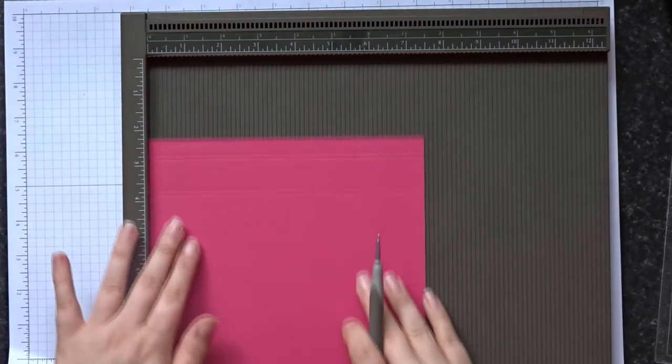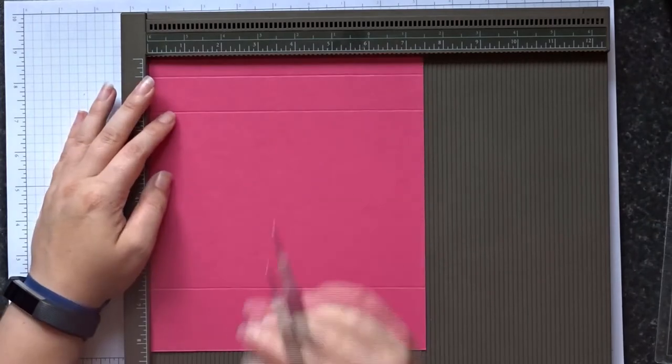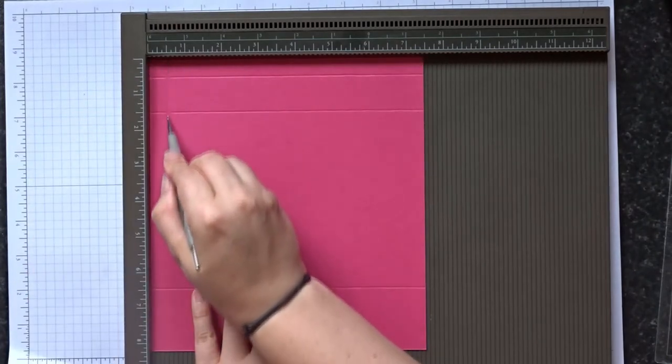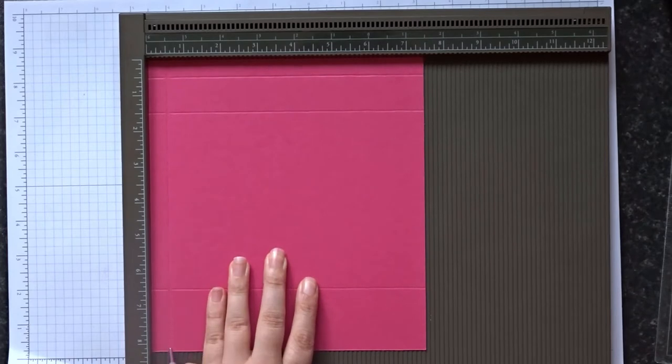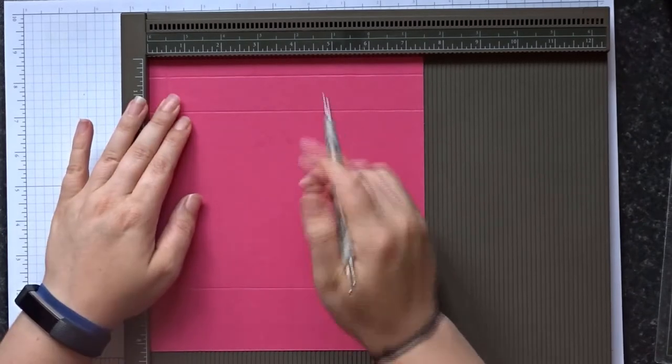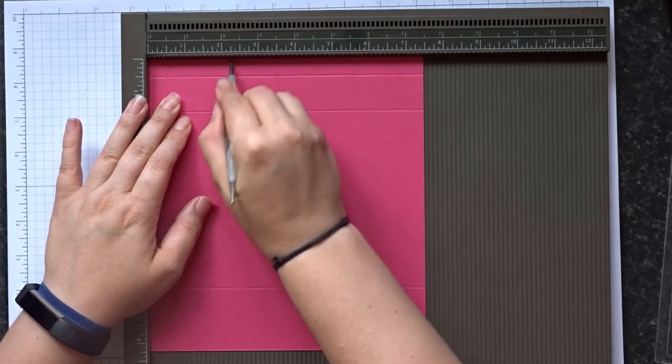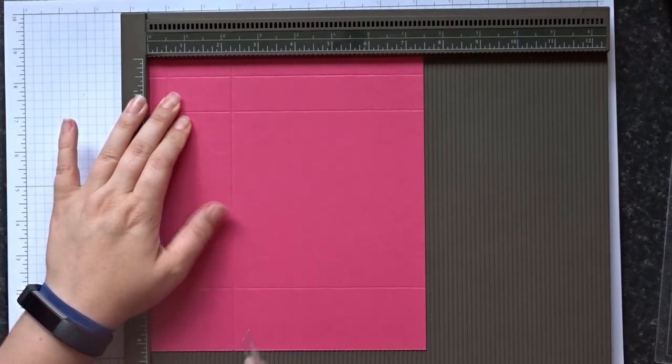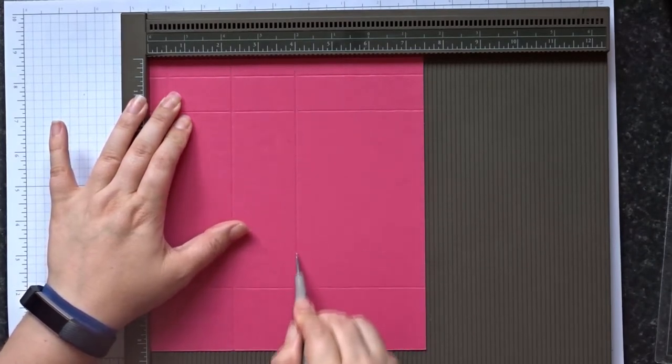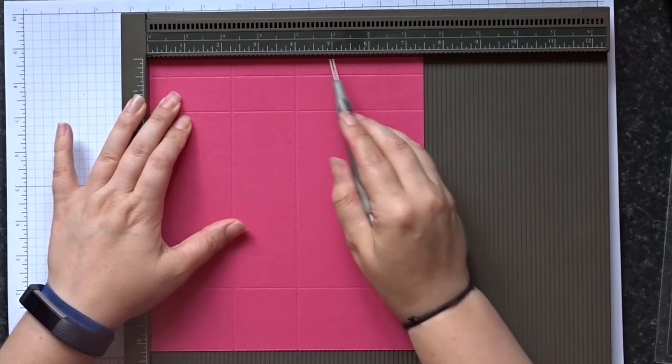And then you're going to rotate it 90 degrees, and we're going to score at half an inch again, two and a quarter, four inches, and five and three quarter inches.